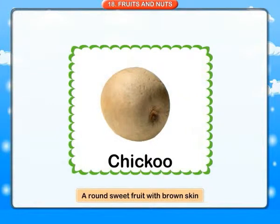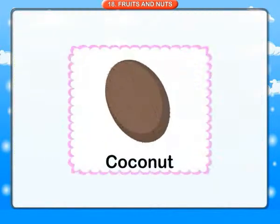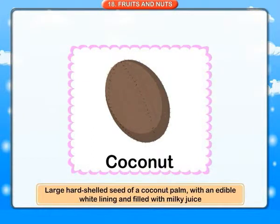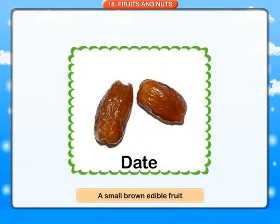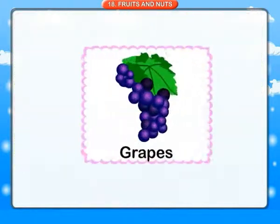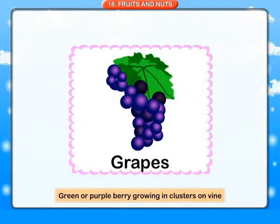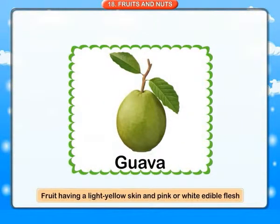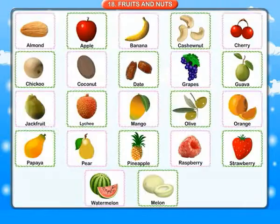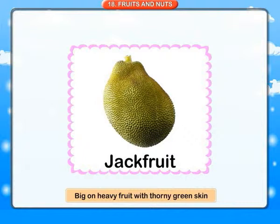Chiku: a round sweet fruit with brown skin. Coconut: a large hard-shelled seed of a coconut palm with an edible white lining and filled with milky juice. Dates: a small brown edible fruit. Grapes: green or purple berries growing in clusters on a vine. Guava: a fruit having a light yellow skin and pink or white edible flesh. Jackfruit: a big or heavy fruit with thorny green skin.